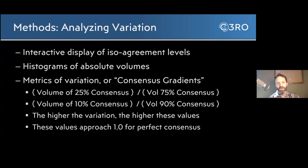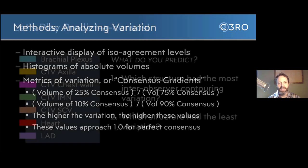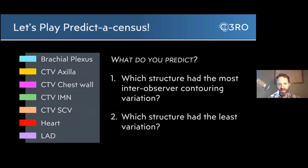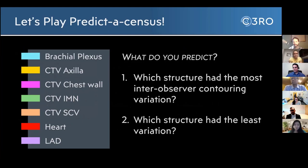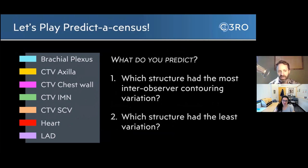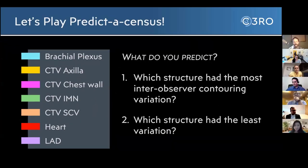Before we kick off one by one, I thought I'd engage our experts and ask: what would you predict? Here are the structures and the colors used for contouring in this exercise. I'd like everyone to think about: if you had to pick one structure you think showed the highest inter-observer variation, what would it be? And what structure might show the lowest variation? Feel free to chime in — I definitely want to hear everyone's opinions.